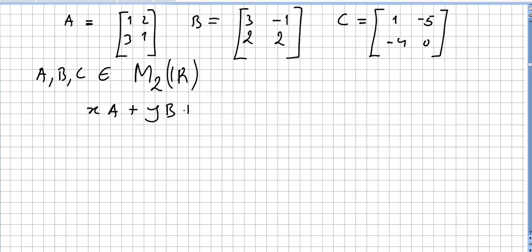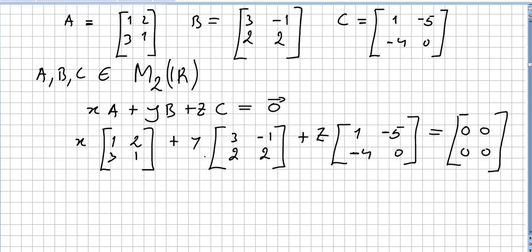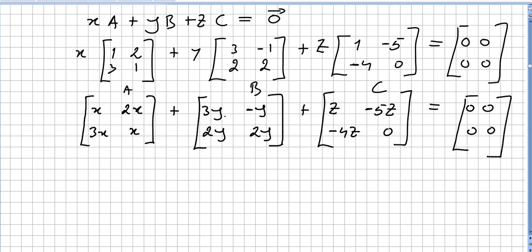xA plus yB plus zC and check if you get matrix 0. So we have x, 2x, 3x, x, 3y minus y, 2y, 2y, z minus 5z minus 4z, 0. And now we add.